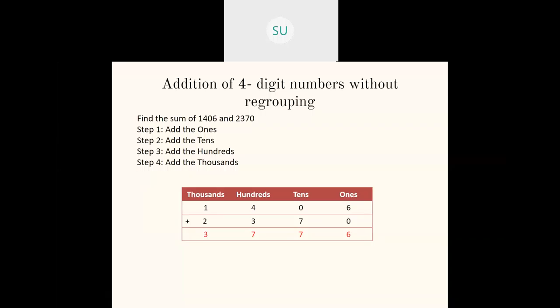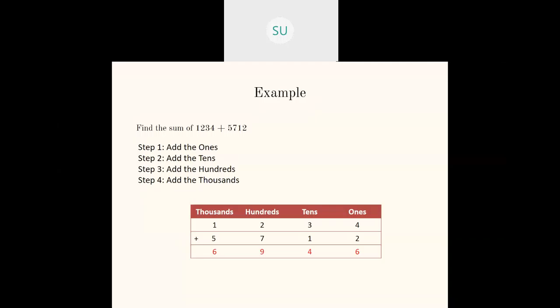We saw the example 1,406 plus 2,370. When we add these two numbers, we get 3,776. Then we saw one more example: 1,234 plus 5,712. There will be no carryover and the answer will be 6,946. We add the ones first, then the tens, then the hundreds, and then the thousands.